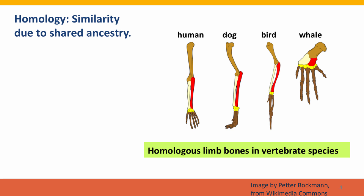Homology is often confused with similarity, and that's because homology is a special kind of similarity. Lots of things are similar. Things that are homologous are similar because of shared ancestry.